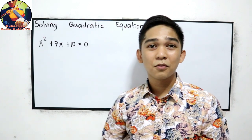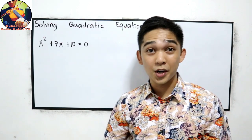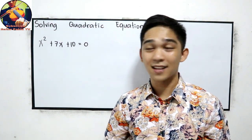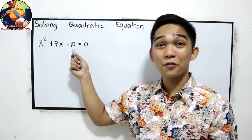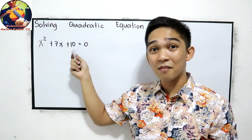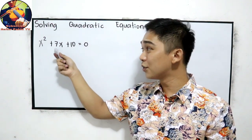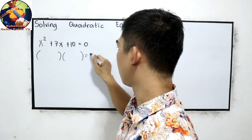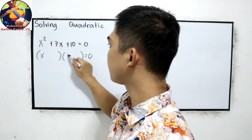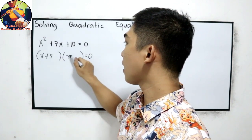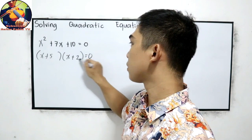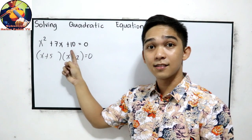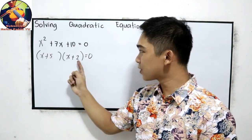How about factoring in the form x squared plus bx plus c equals 0? We can use that. Factors of 10 whose sum must equal 7: that gives us x plus 5 and x plus 2, because 5 times 2 is 10, and 5 plus 2 is 7.